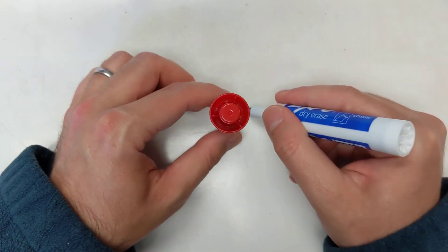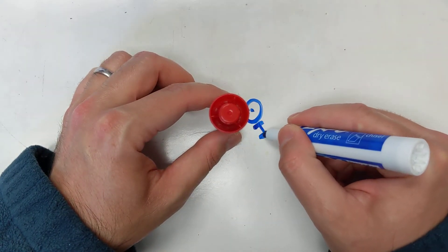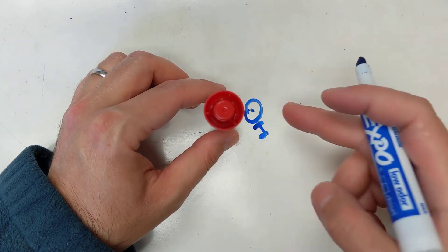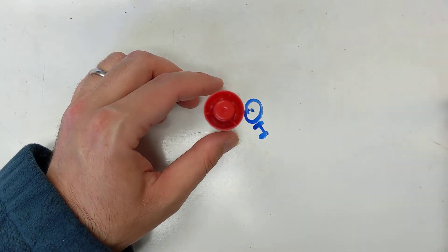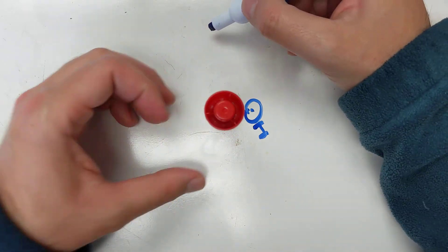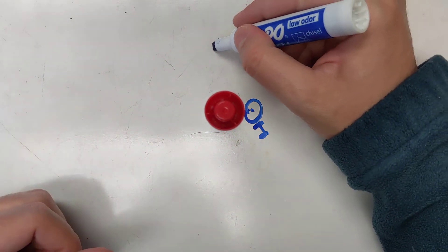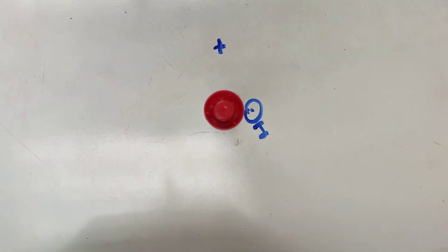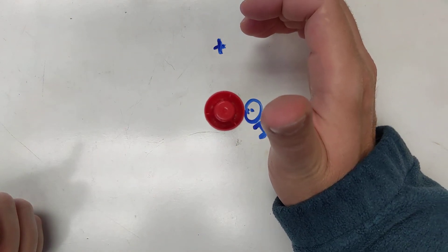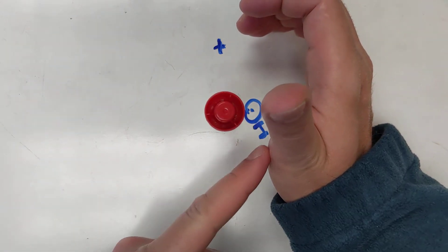I will say that the conventional current is moving towards you. Now to find the direction of the magnetic field here — this is my observation location — my thumb needs to point in the direction of the conventional current.